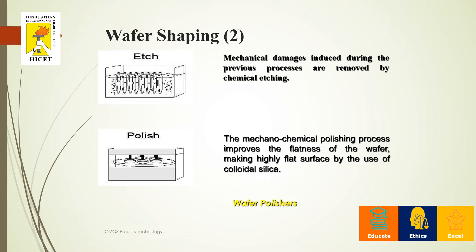After the wafer is shaped, we go for a process called etching to further enhance the shape. Etching is the most important part of fabrication. Any mechanical damage induced by previous processes can be removed by chemical etching, which can be done physically or by using chemical components. Once etching is completed, we perform a polishing process to improve the flatness of the wafer using colloidal silica.